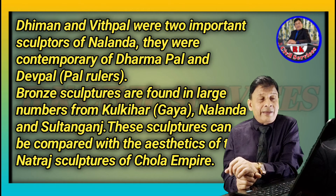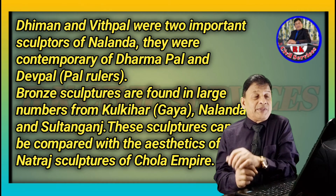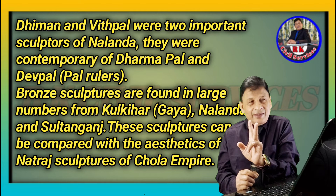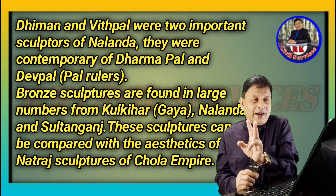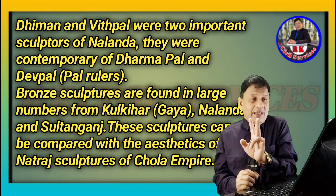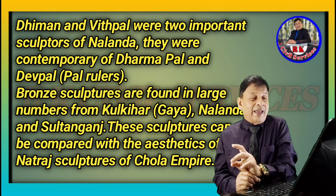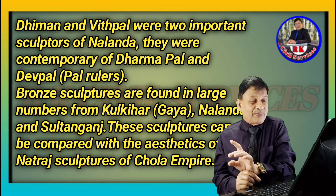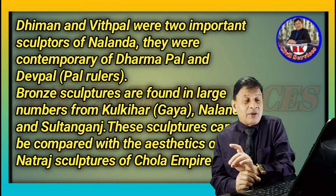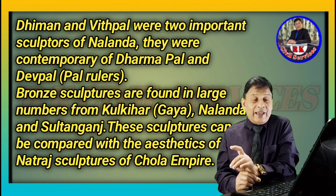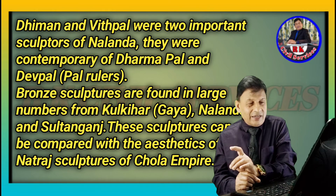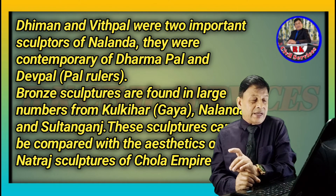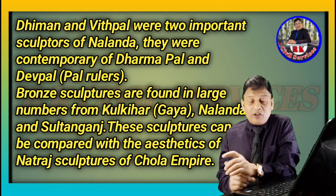Dheeman and Vithpal were two important sculptors of Nalanda, contemporary of Dharmpal and Devpal, the Pala rulers. Bronze sculptures are found in large numbers from Kulkihar, Gaya, Nalanda, and Sultanganj. These sculptures can be compared with the aesthetics of the Nataraj sculptures of the Chola dynasty.